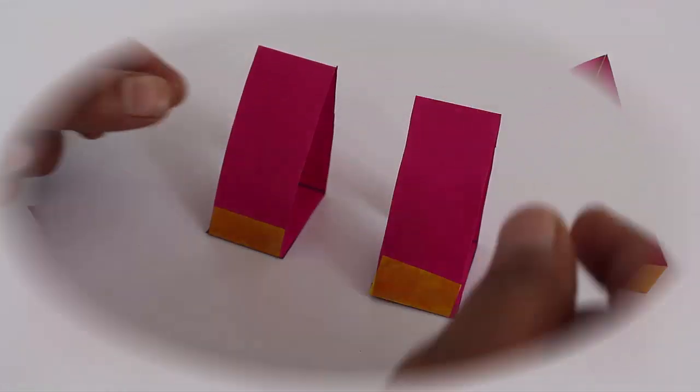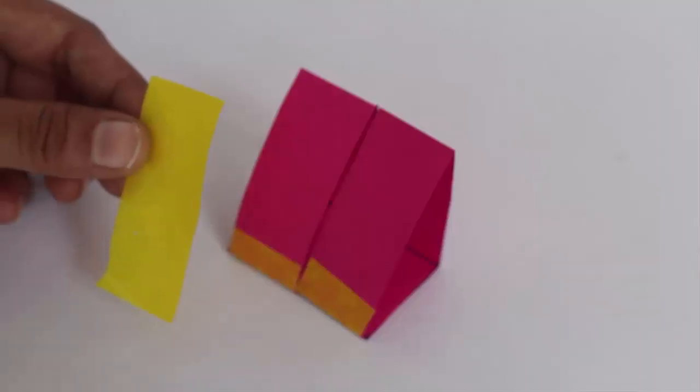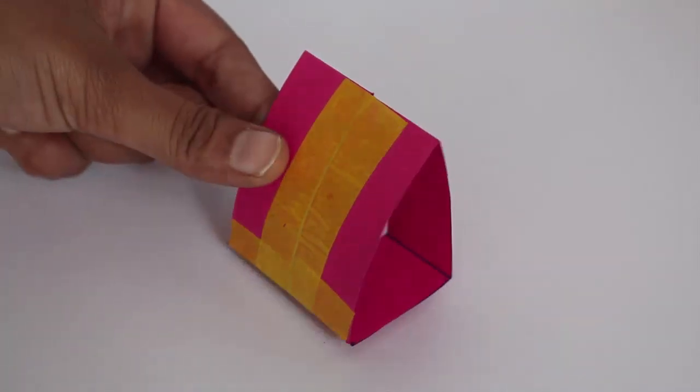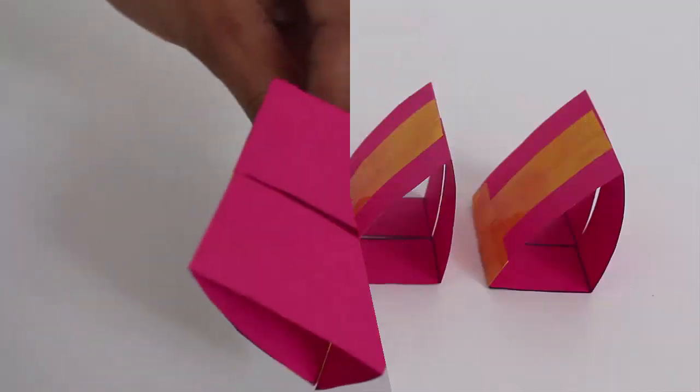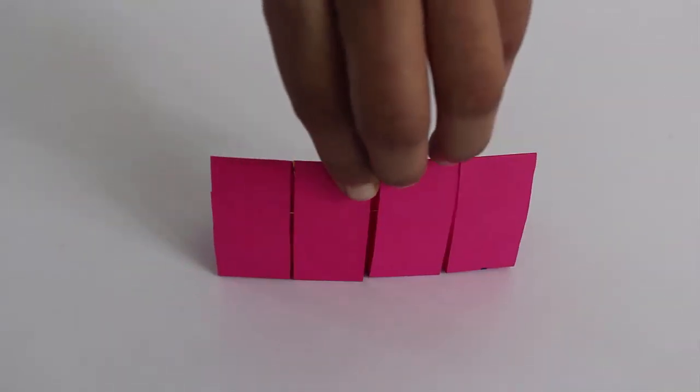Now tape all 8 strips to make triangles. Bring two triangles together as shown and on their hypotenuse tape them. Make four such pairs of two triangles each.